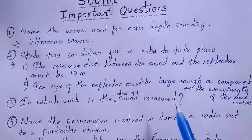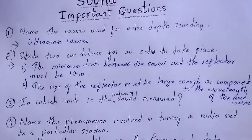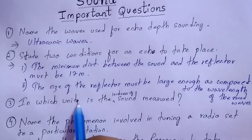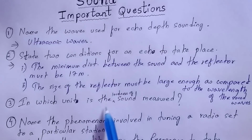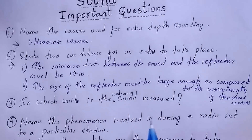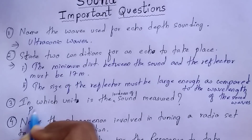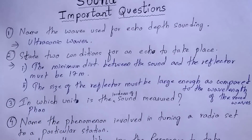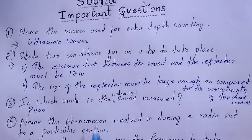Besides these two conditions there are other reasons as well, so you can follow your book for that. The next question: in which unit is the loudness of sound measured? The loudness of sound is measured in a unit called phon — that is P-H-O-N — not the mobile phone. This is the unit of loudness of sound.